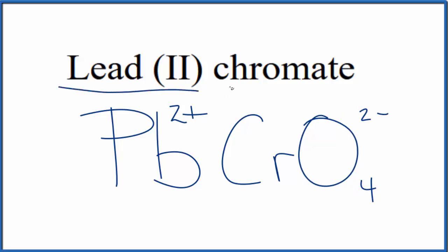So lead is a transition metal, it's a metal, and the chromate, that's a group of nonmetals, that's a polyatomic ion. Metal, nonmetals, this is an ionic compound.